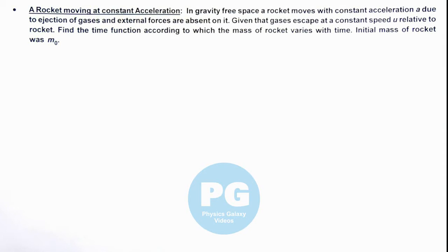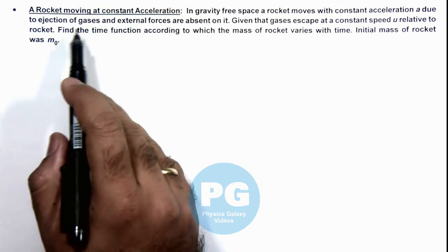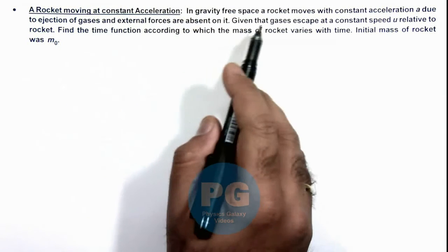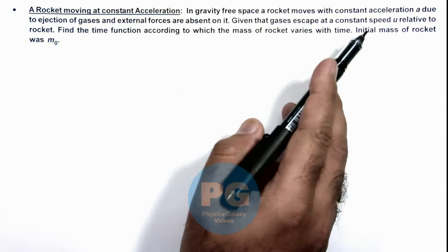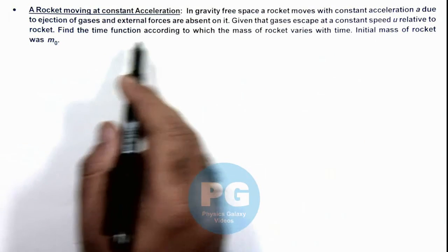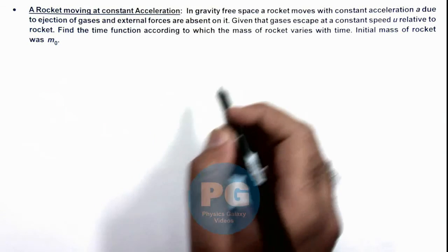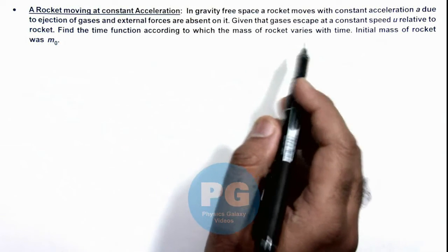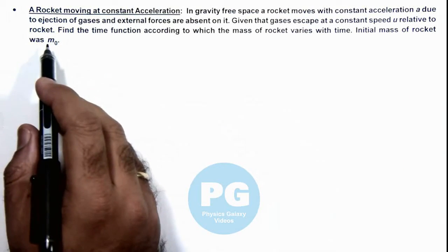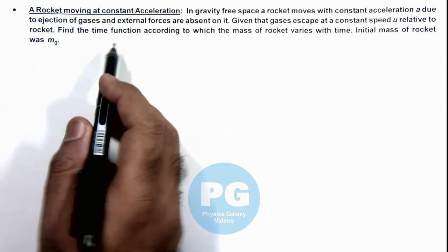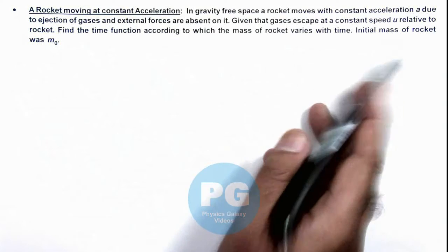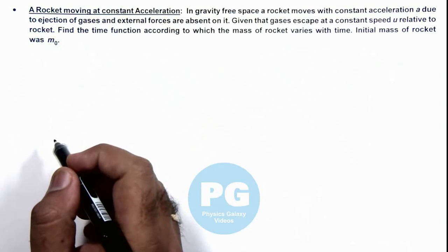In this illustration, we are given that a rocket is moving at constant acceleration in gravity-free space. Gases escape at a constant speed u relative to the rocket. We are required to find the time function according to which the mass of rocket varies with time, with initial mass m₀.